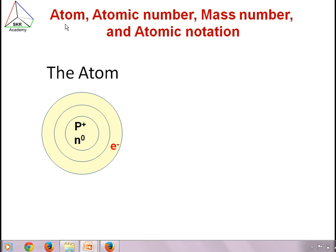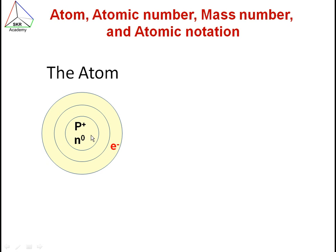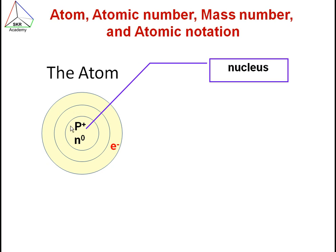So let's take a look first at the atom. What is an atom? The atom consists of three subatomic particles: proton, neutron, and electrons. Proton has a positive charge, neutron has a zero or neutral charge – they don't have any charge. An electron has a negative charge. Proton and neutron remain in the center of the atom, which is called the nucleus.